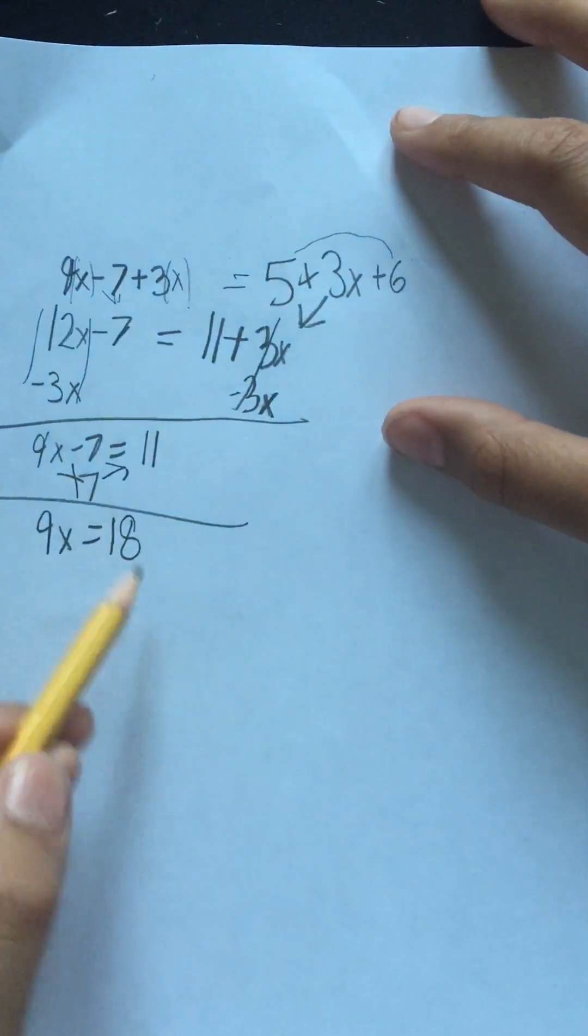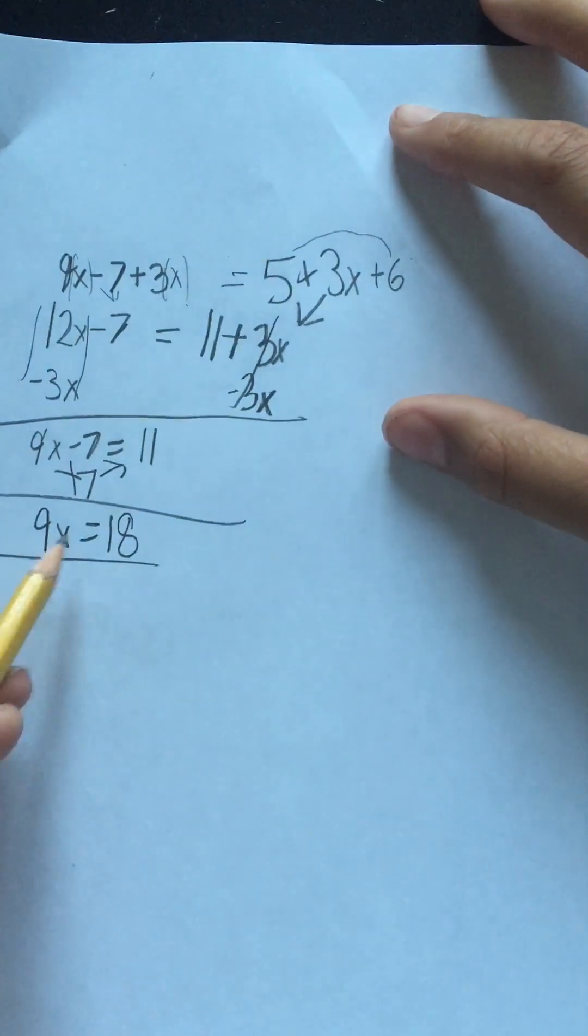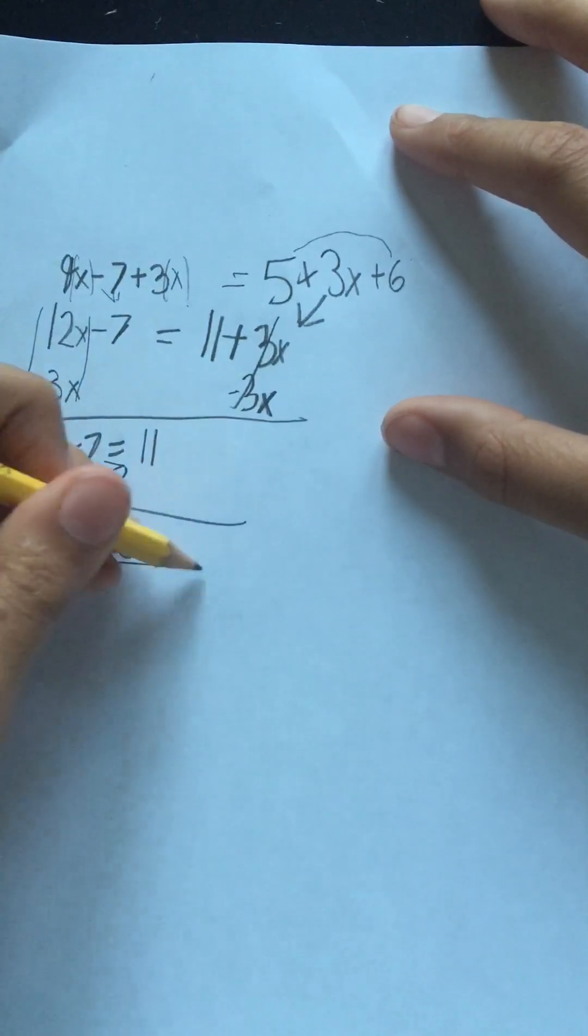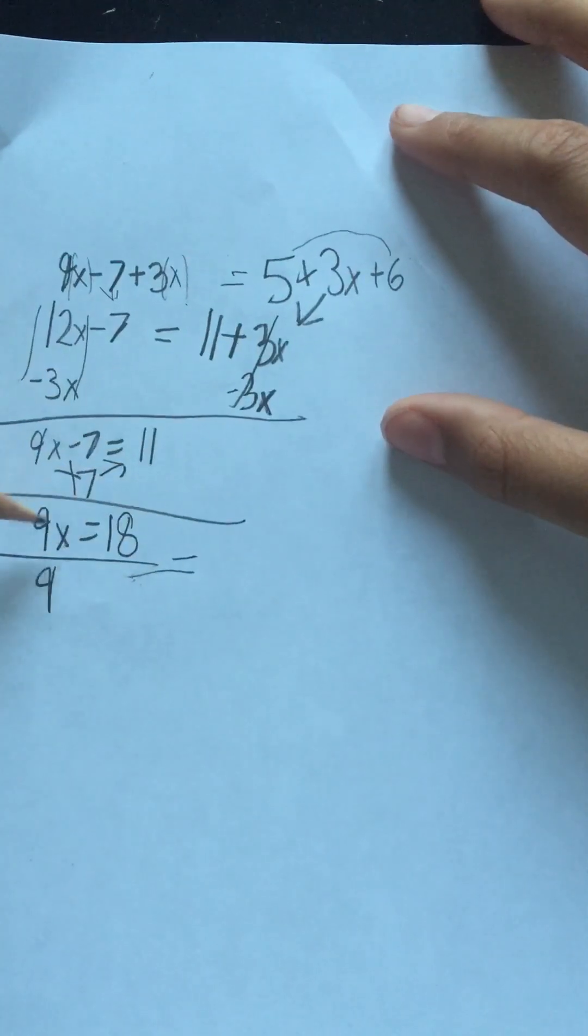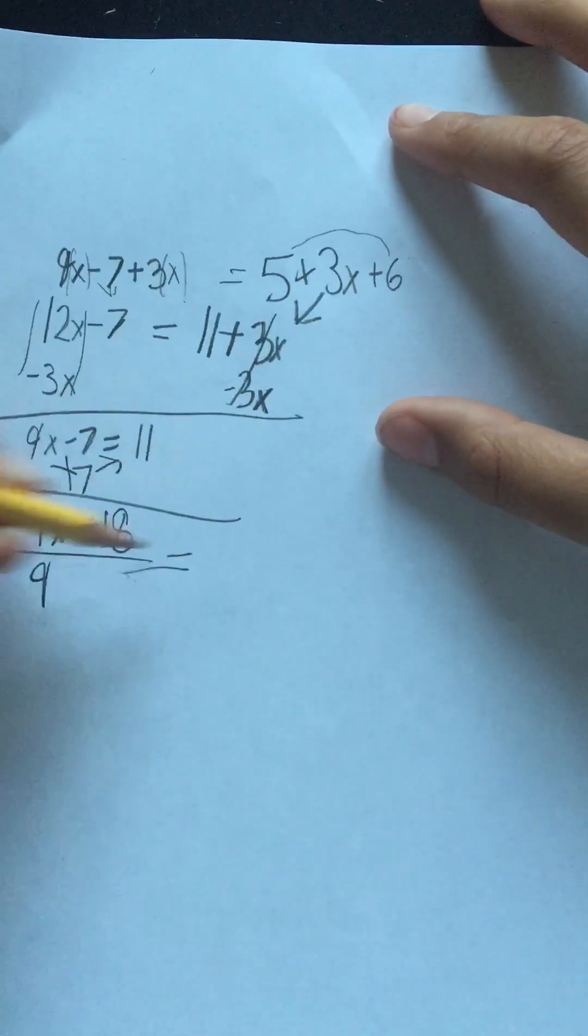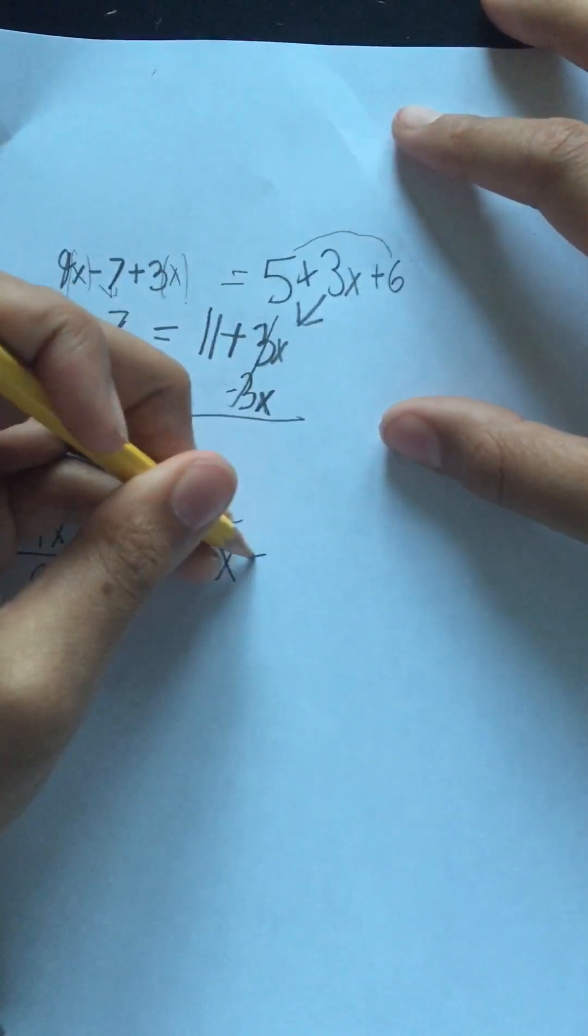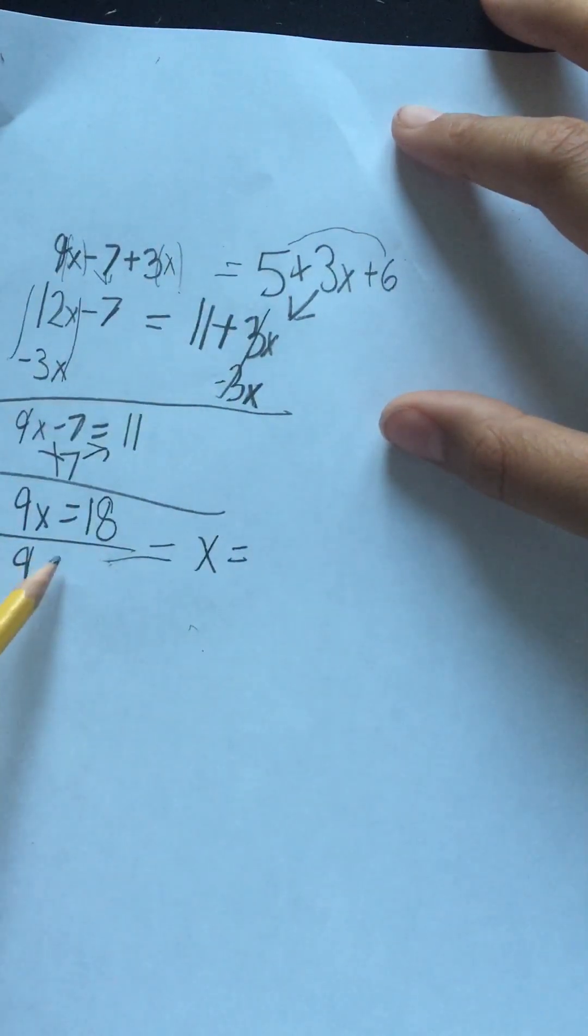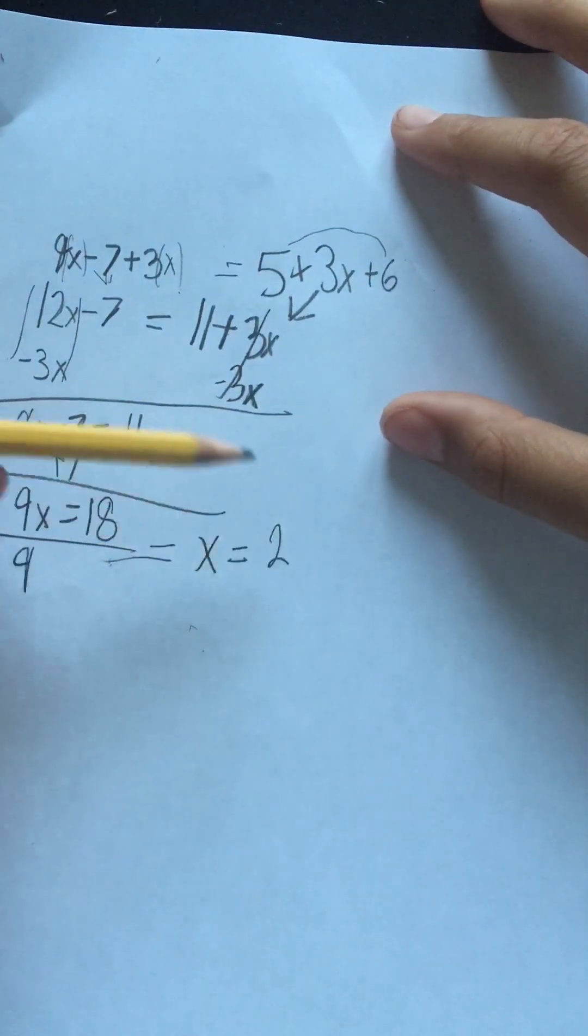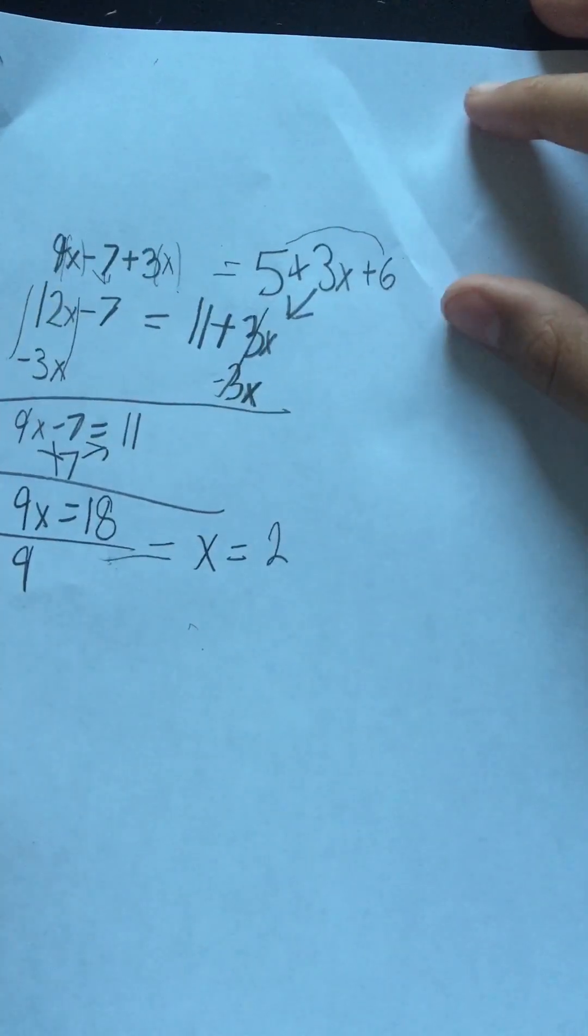Now, all we have to do is divide by what x is being multiplied to get a singular x. When we divide, 9x divided by 9 is going to be 1, which is just going to be x, and then 18 divided by 9 is going to be 2. So, x is equal to 2.